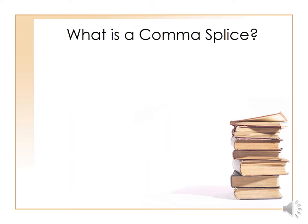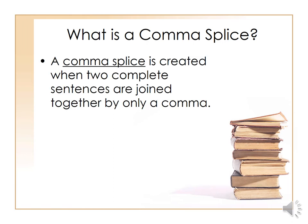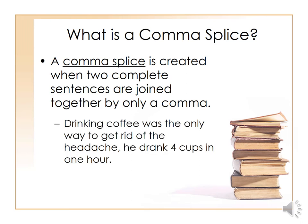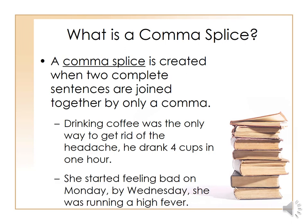The second kind is what we call a comma splice. A comma splice is created when two complete sentences are joined together by only a comma. Using the same example: 'Drinking coffee was the only way to get rid of the headache, he drank four cups in one hour.' The comma here is doing only a pause, which signals an incomplete sentence — but we actually have two complete sentences. Another example: 'She started feeling bad on Monday, by Wednesday she was running a fever.' These are called comma splices.